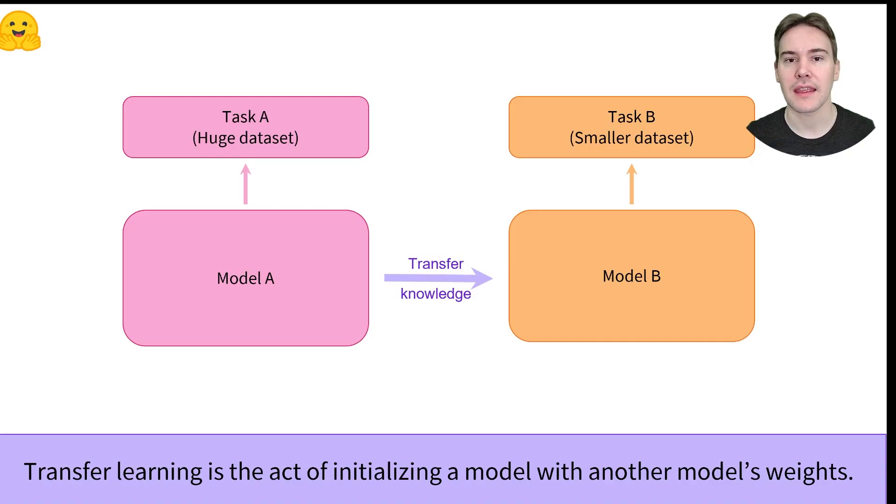Model A will be trained specifically for task A. Now let's say you want to train a model B for a different task. One option would be to train the model from scratch. This could take lots of computation, time and data.